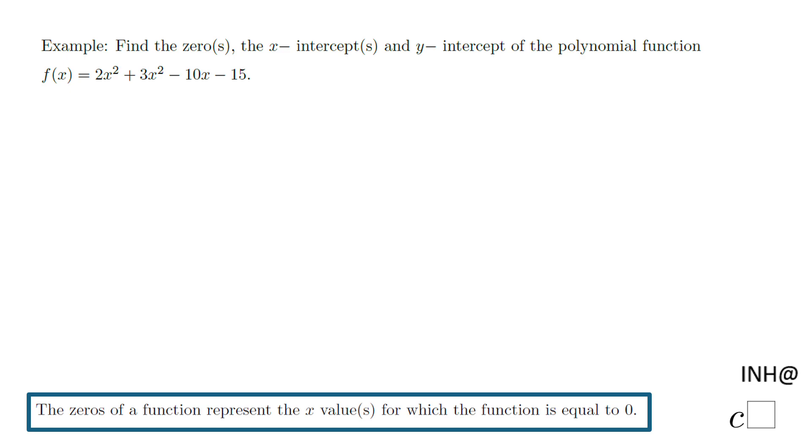Welcome or welcome back at I Need Help at C Square. In this example we will find the zeros, the x-intercepts, and the y-intercept of a polynomial function. The polynomial function given is f(x) = 2x³ + 3x² - 10x - 15.